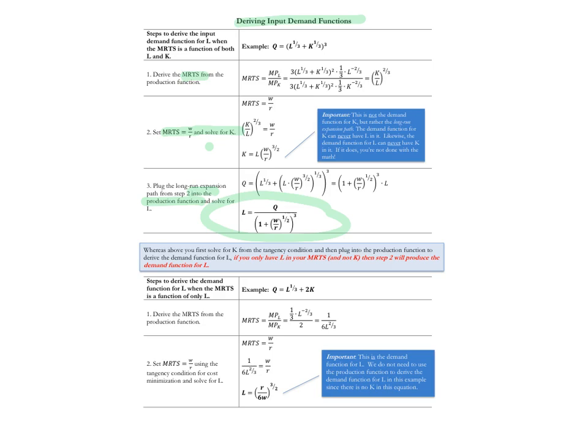Just like in consumer theory, when we have quasi-linear production, the steps are going to look a little bit different. That's because for quasi-linear production — just like we saw for quasi-linear utility — the MRTS is a function of only one of the inputs. Solving for that input's demand doesn't require the production function itself. Let me take a step back.